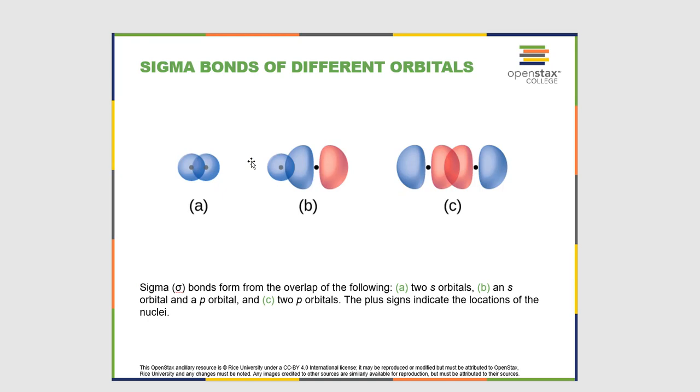Now if you were to look at some different types of orbitals and sigma bonds, here's a sigma bond between two s orbitals. Here's a sigma bond between an s orbital and a p orbital. And here's a sigma bond between two p orbitals that you've seen before. Now it turns out that these orbitals are going to hybridize, as we'll talk about in the next section. But what's important to remember here is that a sigma bond occurs between two atoms.